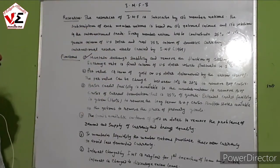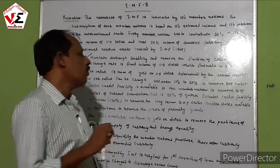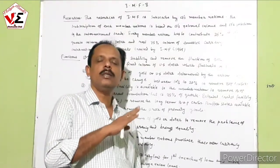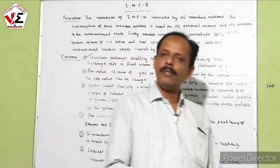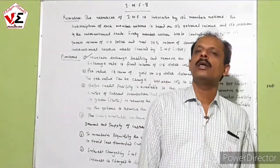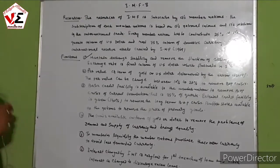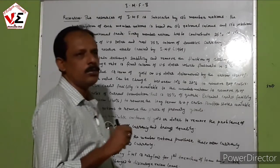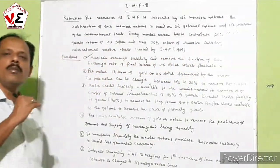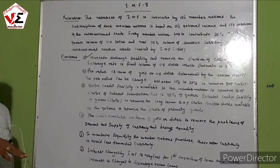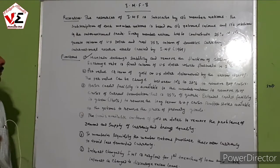Par value is determined in terms of gold or US dollar by the nation itself. A variation of par value from 10% to 20% is done by the nation itself; the IMF does not interfere in the determination of par value. According to the crisis of the balance of payments, the IMF works to remove all deficits or surpluses in the balance of payments.